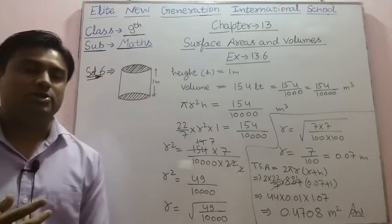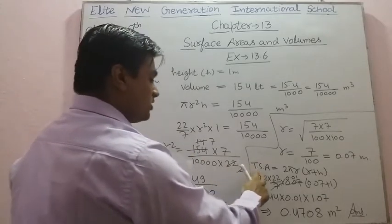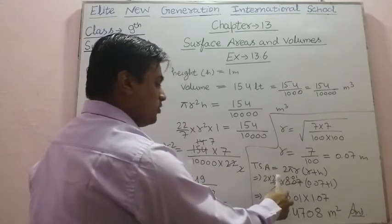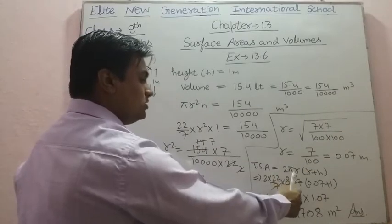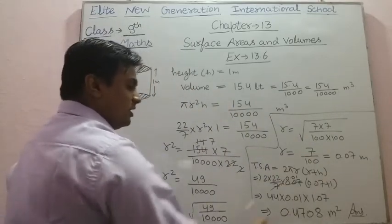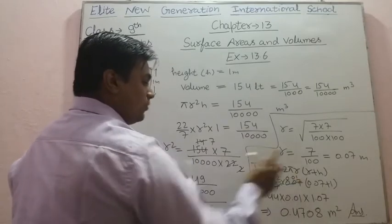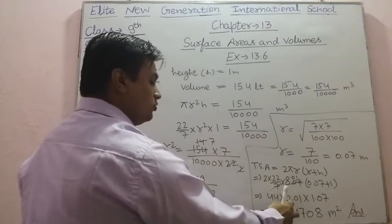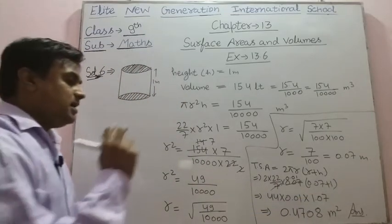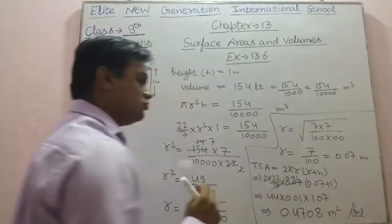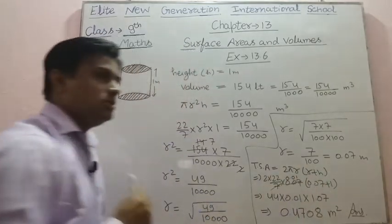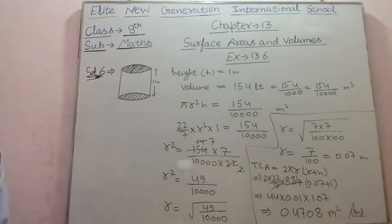Now we have to find the total sheet required to make this closed cylinder, which equals its total surface area. Total surface area of cylinder = 2πr(r + h). Putting values: 2 × (22/7) × 0.07 × (0.07 + 1). The 0.07 cancels with 7 to give 0.01; 2 × 22 × 0.01 × 1.07 = 44 × 0.01 × 1.07 = 0.4708 meter square. So total sheet required is 0.4708 meter square.